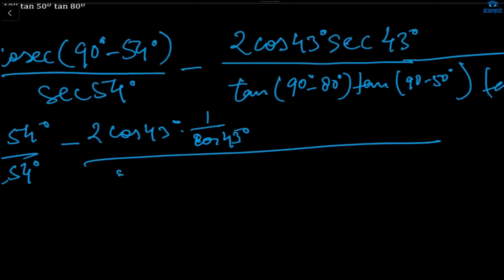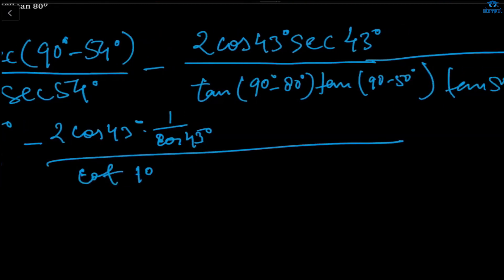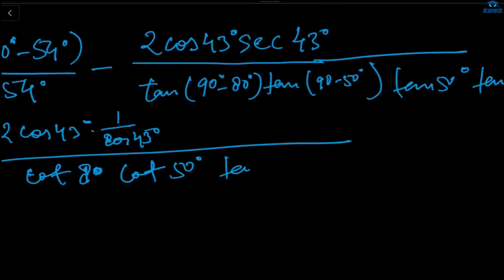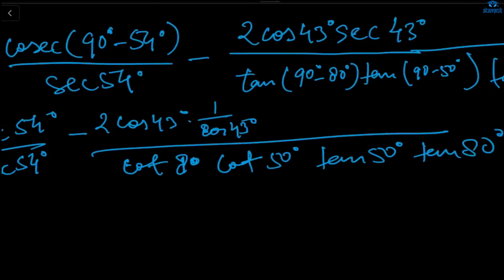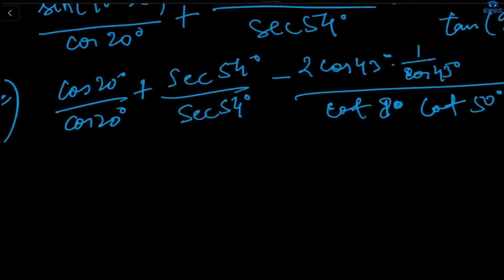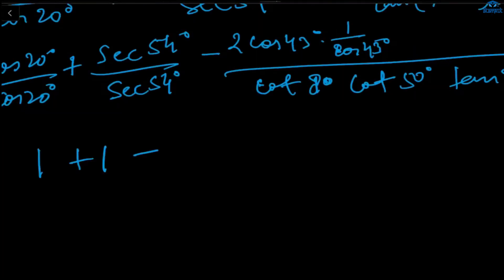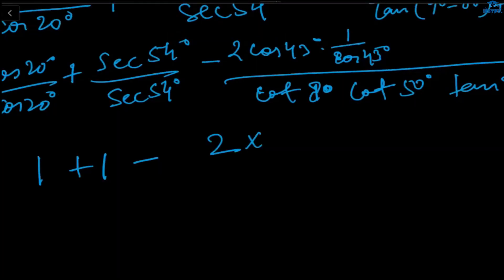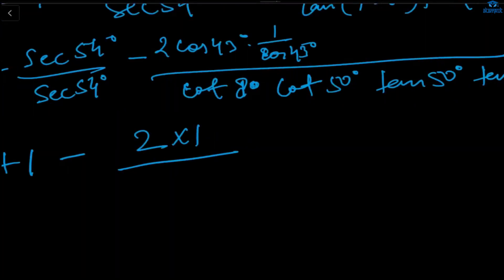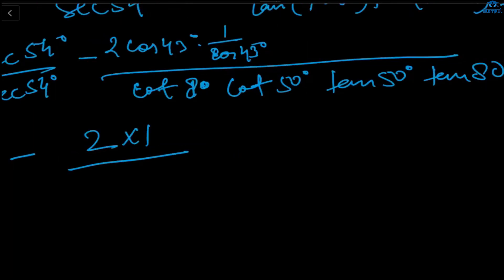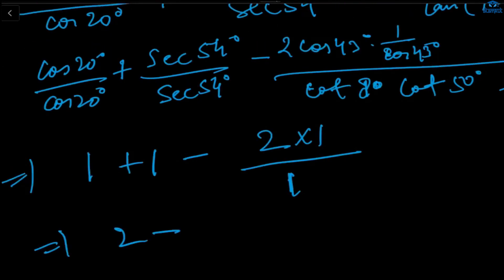Writing sec as 1/cos, the cos 43° terms cancel to give 1. In the denominator there are four tan terms: tan 10°, tan 40°, tan 50°, tan 80°. We change tan 10° to cot 80° and tan 40° to cot 50° using complementary angles. Cot is the reciprocal of tan, so cot 80° cancels with tan 80°, and cot 50° cancels with tan 50°, giving 1. So the entire expression equals 1 plus 1 minus 2 times 1, which equals 0.